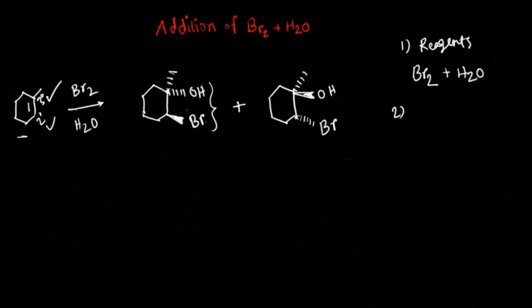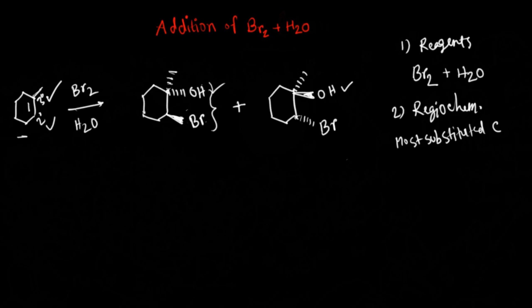The second thing we have to remember is the regiochemistry. You can clearly see that we have a tertiary carbon here and a secondary carbon across the double bond. The regiochemistry is that our hydroxyl group is going towards the most substituted carbon.